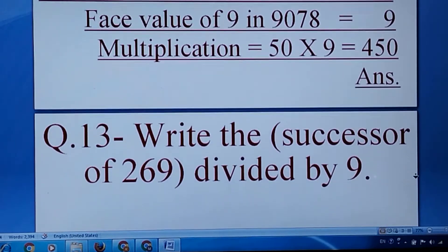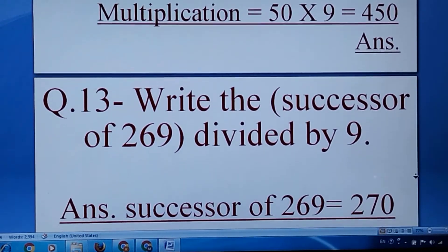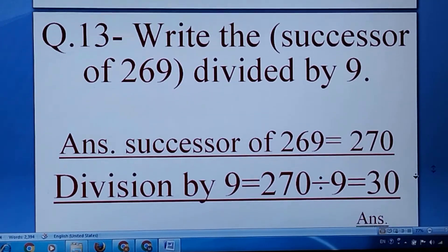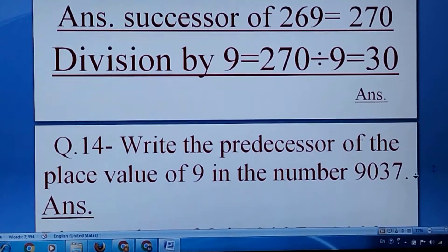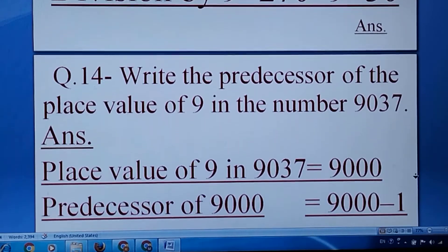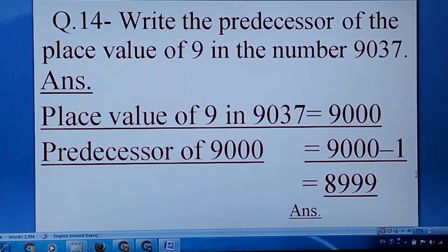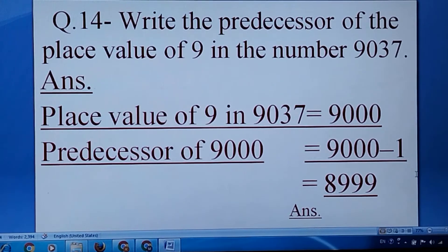Question number thirteen: write the successor of 269 first and then divide it by 9 — you will get the answer. Now write the predecessor of the place value of 9 in 9037. Predecessor means minus 1. First, write the place value of 9, that is 9000, and then write the predecessor — it is 8999.